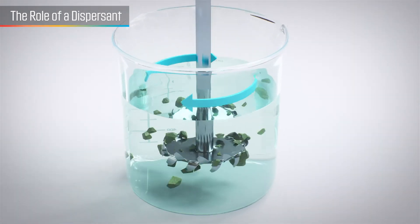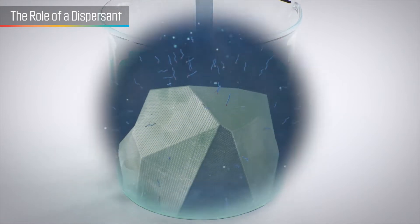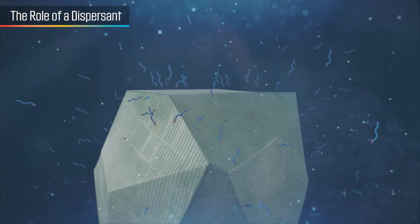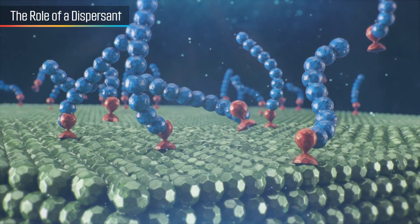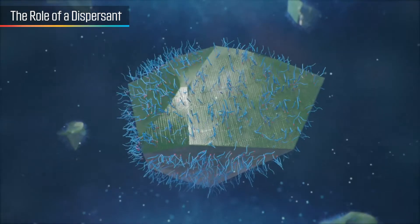The role of a dispersant is to adsorb onto the pigment surface, prevent flocculation of the pigment particle during milling, resulting in a stable pigment dispersion.